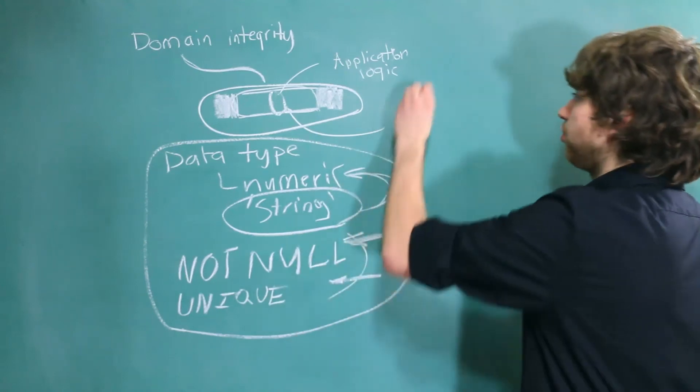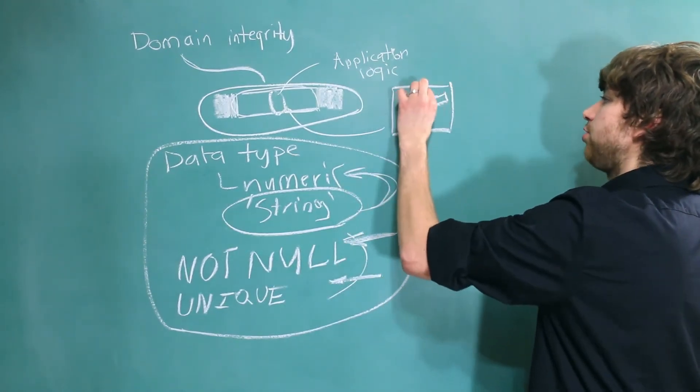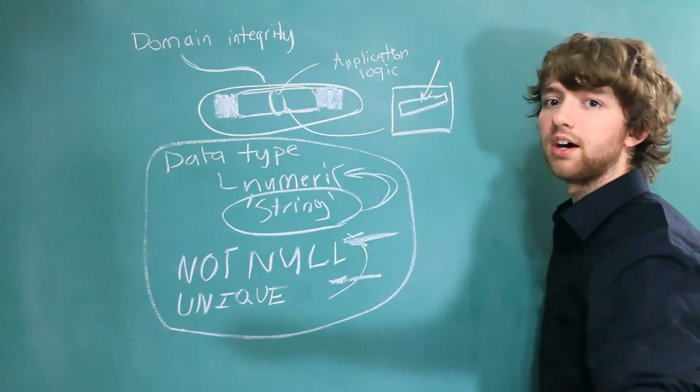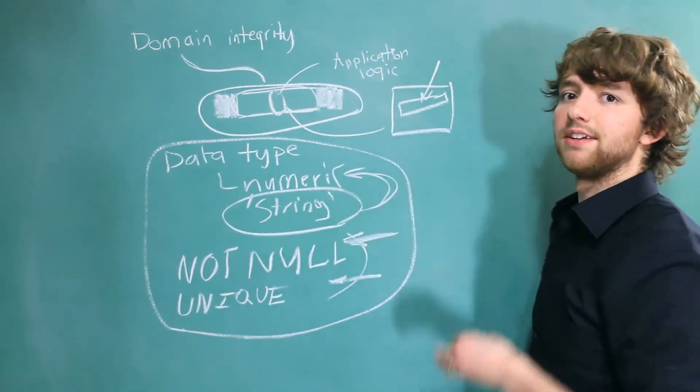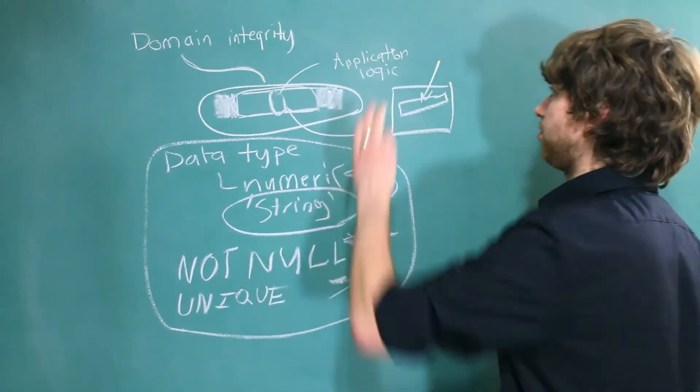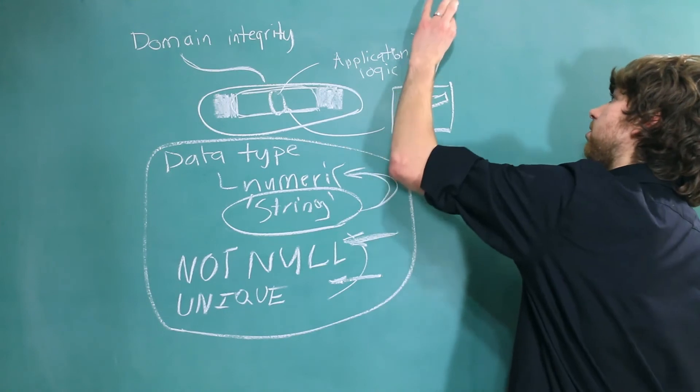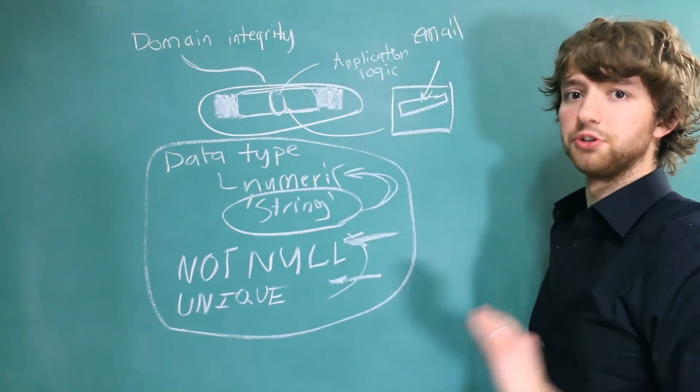Imagine a website, right, and you're signing up and you have to put in an email. And you just put some garbage in there that's not an email, clearly. Well, you can do things to make sure that that data is an email. For one, on the client side, you can make the input an email, which with HTML5 is already going to bark at you and tell you you're doing it wrong.